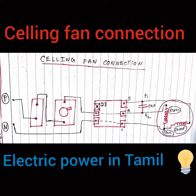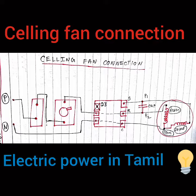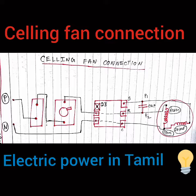If you look at the center side, there is a joint here. The common point and the second line connect together. The starting terminal connects to the center. The important thing is that the phase goes to the starting winding. The capacitor connects between the starting terminal and the running terminal.